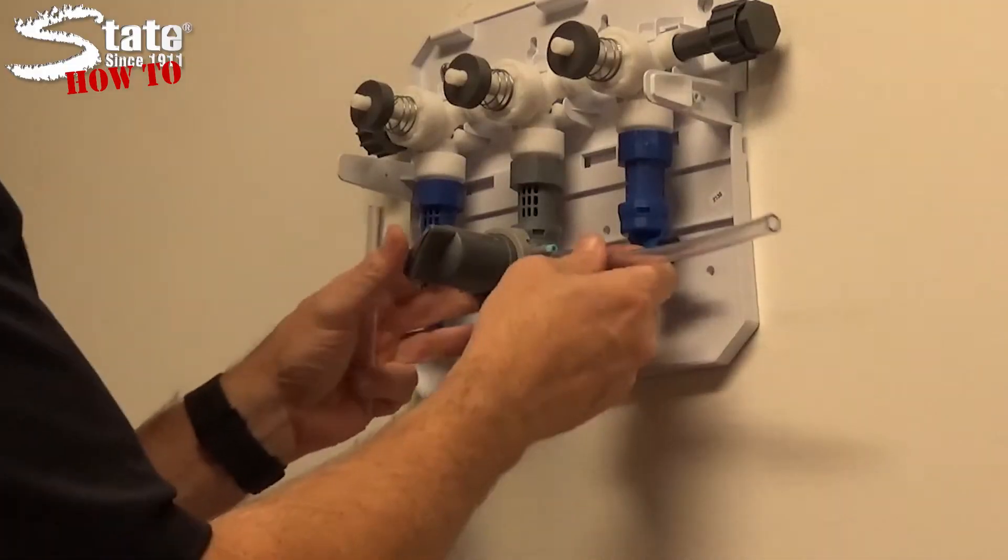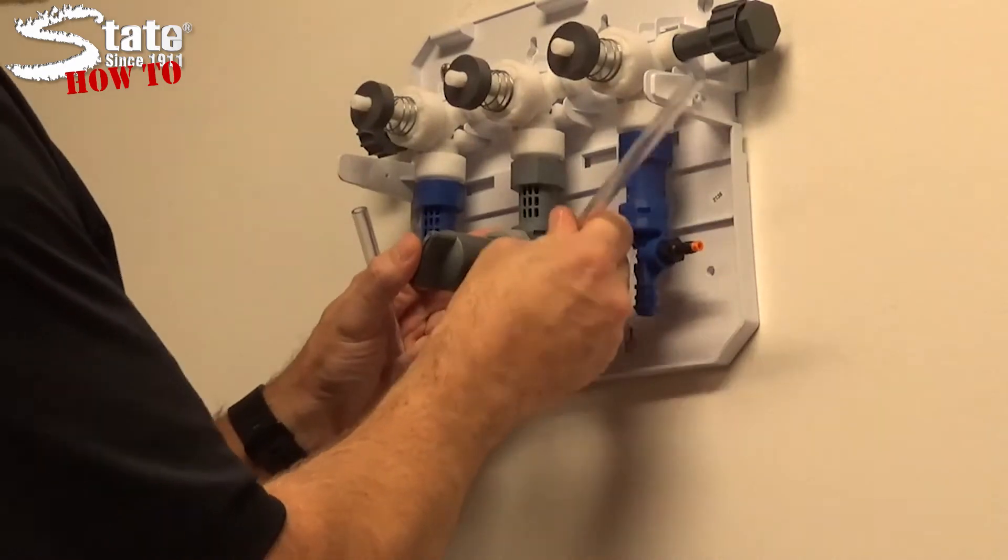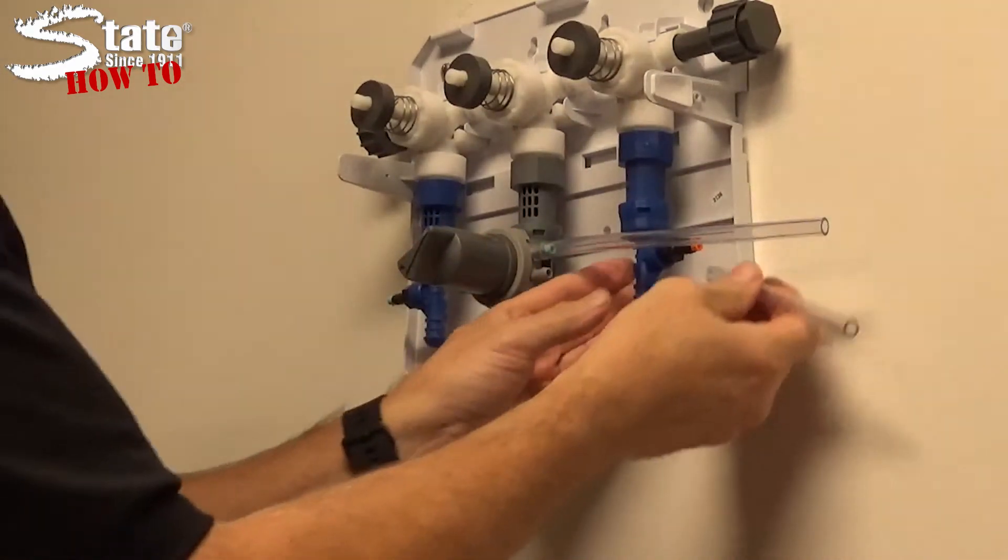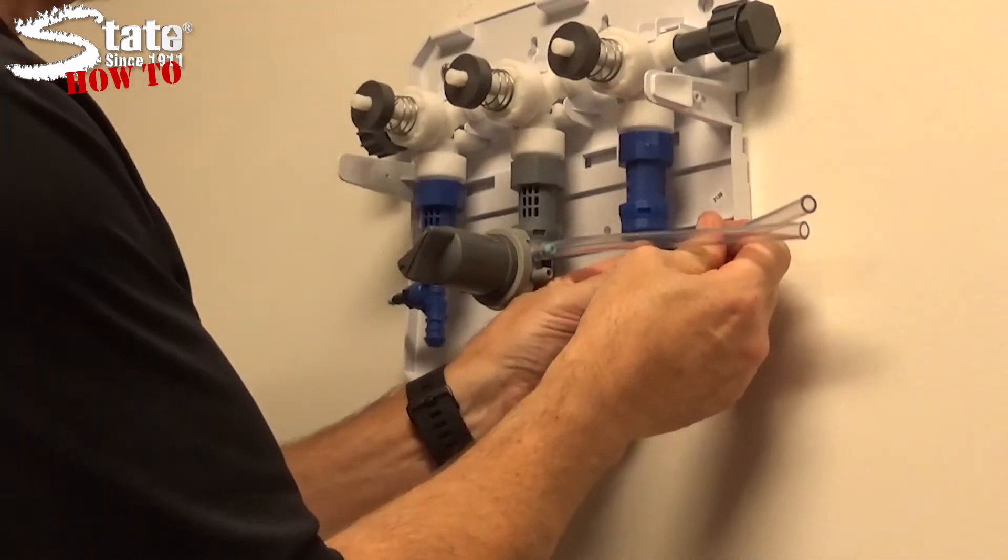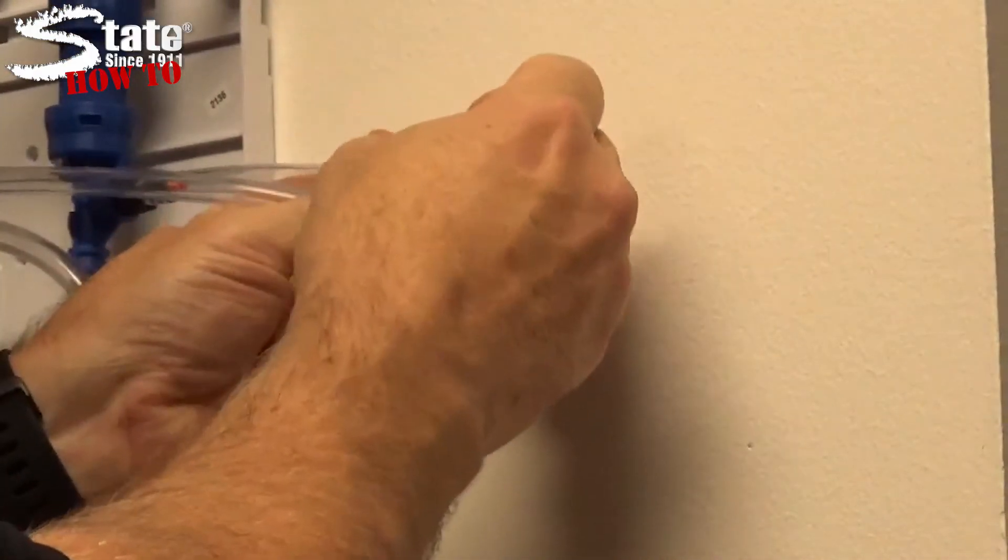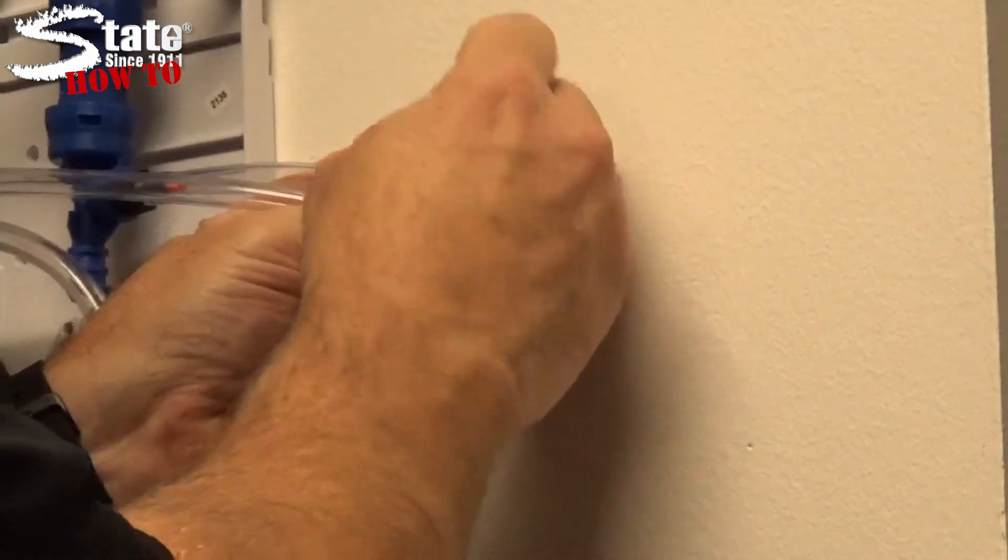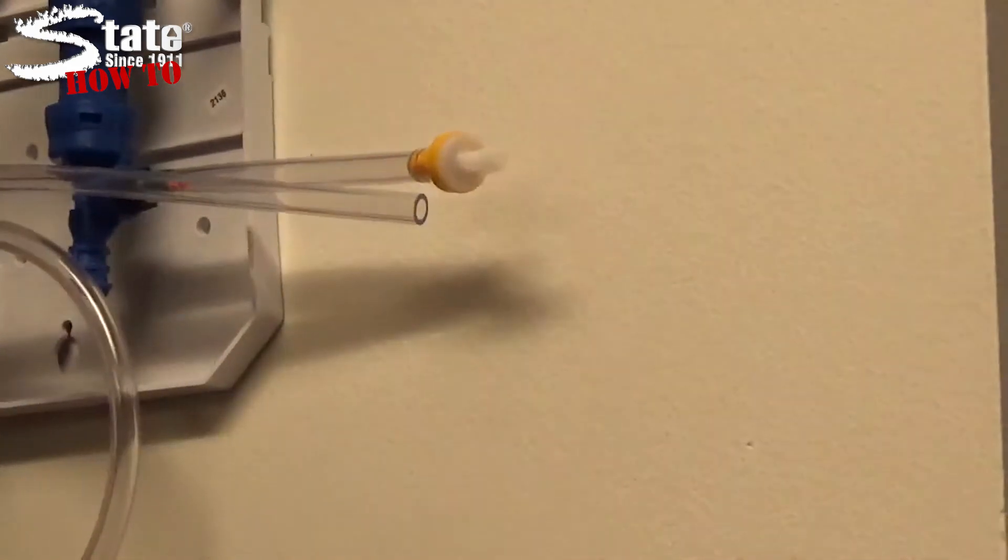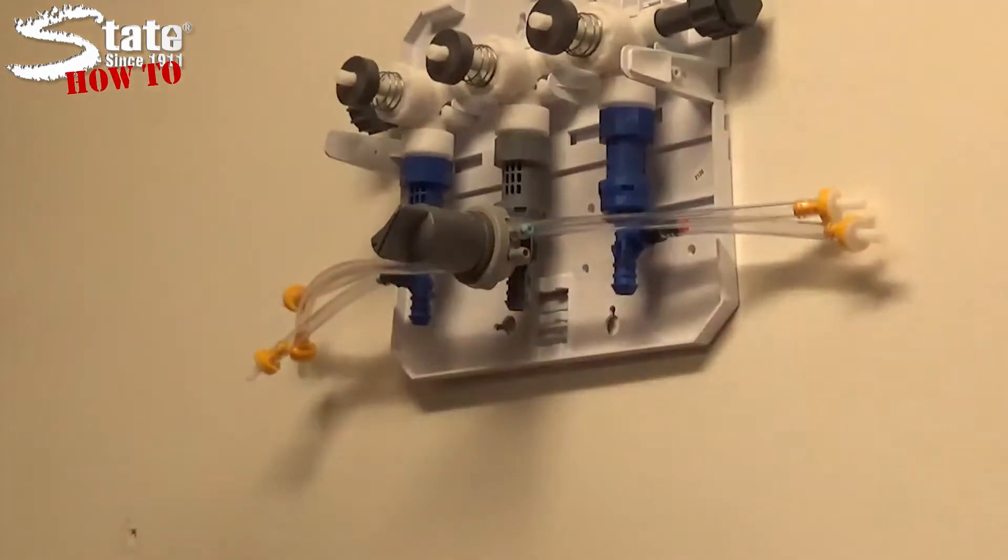Next, attach the feed tubes. Long tubes are attached to the center quart bottle dispenser barbs, while short tubes go to the outside bucket fill barbs. Next, to keep the chemical feed tubes primed, install a check valve on each of the feed tubes. Make sure your valve is going in the right direction. Yellow ends should always be pointed up.